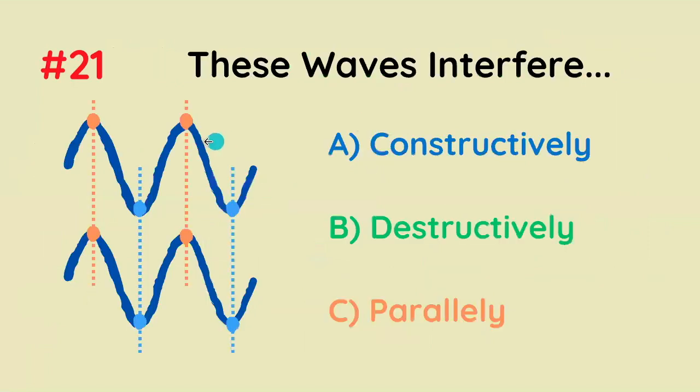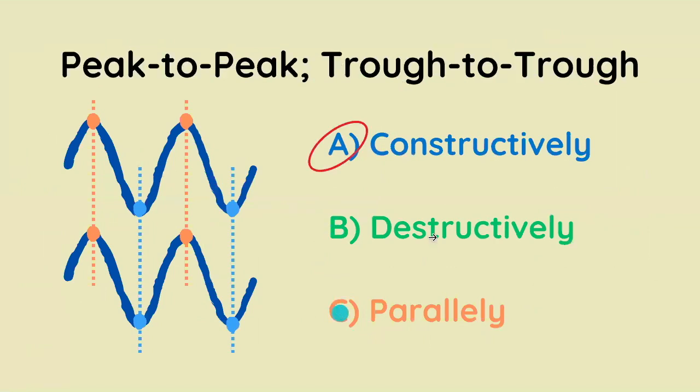These waves interfere constructively, destructively, or parallelly? It's constructively, because it's peak to peak, trough to trough — they line up.